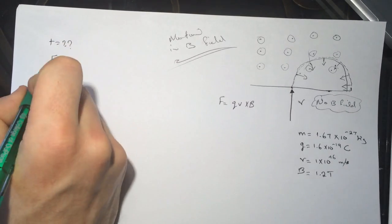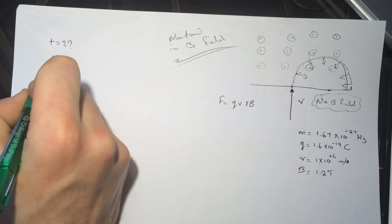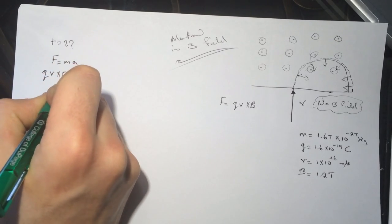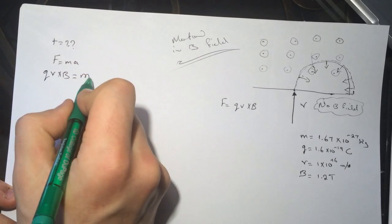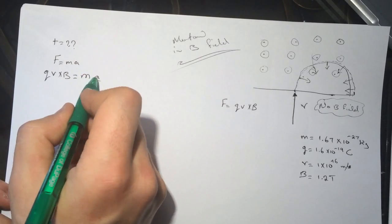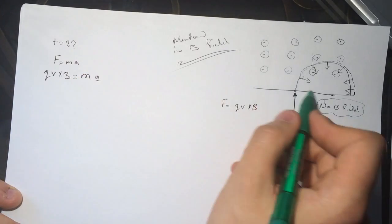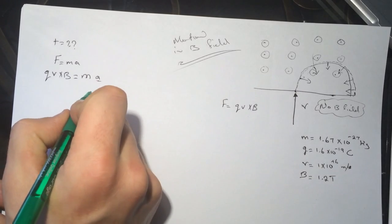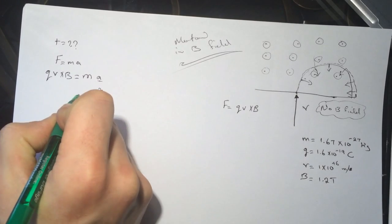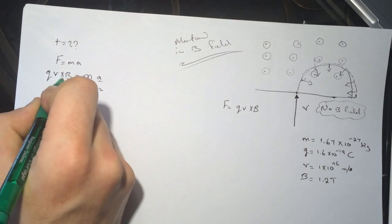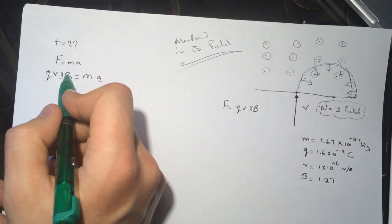And the force here is Q V cross with B equal M A, and the A here is centripetal acceleration, which is V squared over R times M.